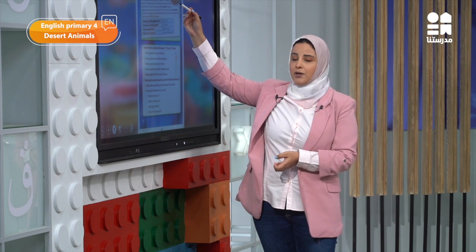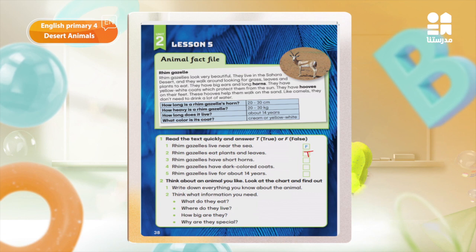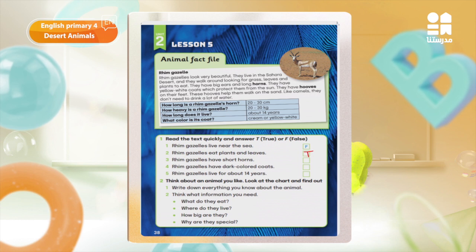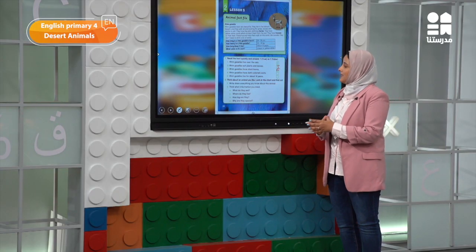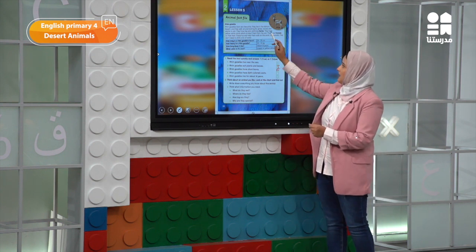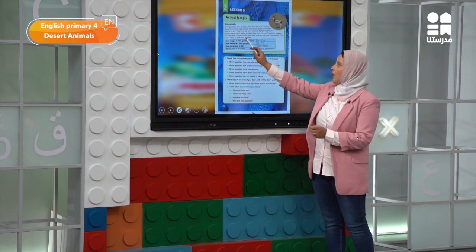Number three: rim gazelles have short horns. Let's go back and find the word 'horns' in the passage. We said they have big ears and long horns, so when the question says rim gazelles have short horns, that is of course false. Number four: rim gazelles have dark colored coats. The keyword is 'coats.' Going back to the passage, it says they have yellow-white coats, so number four is false.